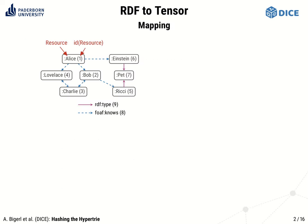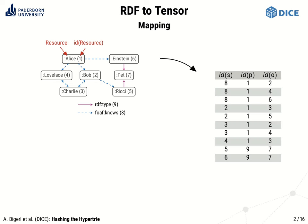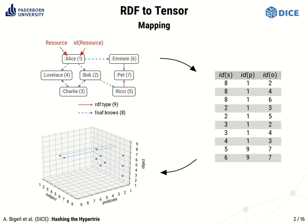I'll now shortly introduce the mapping from RDF to tensors. Consider this small RDF graph with a social network involving some entities that are pets. You can see along each RDF resource an integer — that's a unique ID for each resource. Using those IDs, we can compile a list of ID triples, which we then use to populate a tensor representation of the graph.